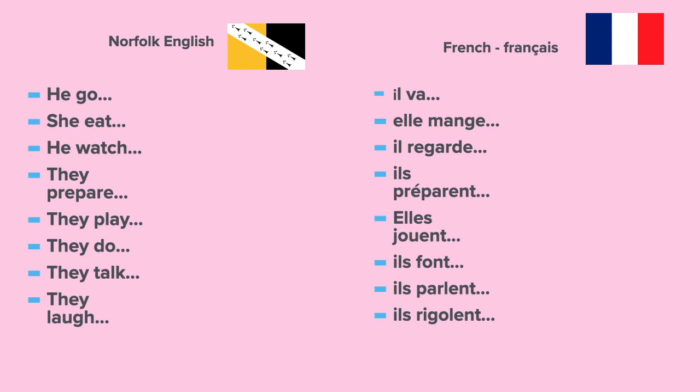On the left we have the Norfolk English stripped down: 'he go', 'she eat', 'he watch', 'they prepare', 'they play', 'they do', 'they talk', 'they laugh'. And on the right we have the French equivalent — just two parts each: 'il va', 'elle mange', 'il regarde', 'ils préparent' — notice we don't pronounce the NT — 'elle joue', 'ils font', 'il parle', 'il rigole'. By going into that Norfolk English and just having the two parts, we then mirror that by just having two parts in the French.